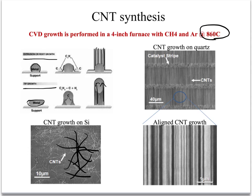Scientists found out that CNT growth is directional and aligned on quartz wafers. Nowadays, we define iron catalyst lines or any other metal catalyst lines by lithography on quartz wafers, and then we do the growth to get aligned carbon nanotubes between the catalyst stripes.